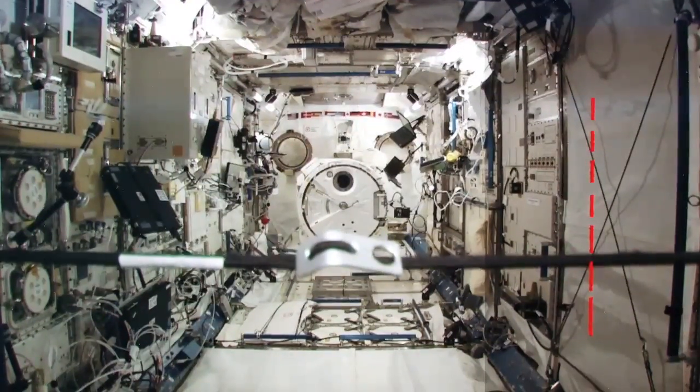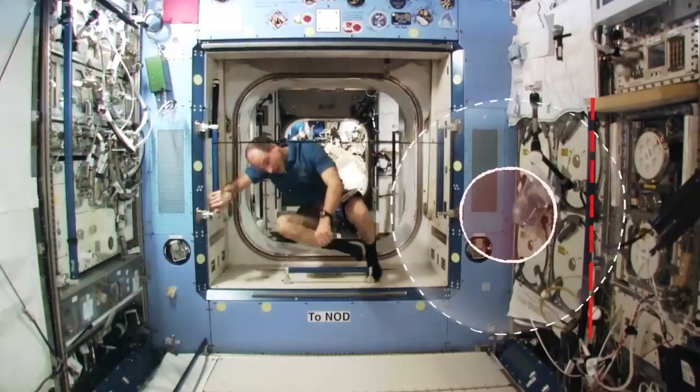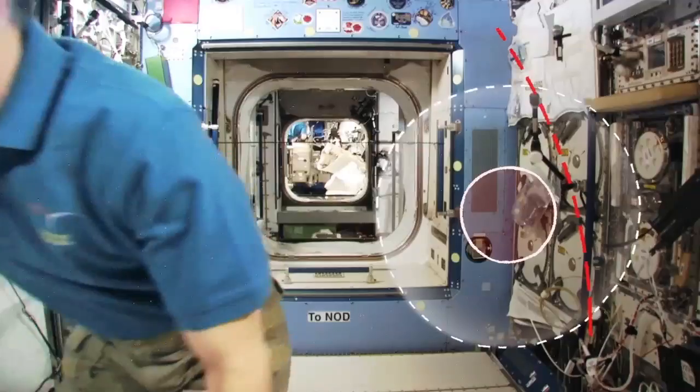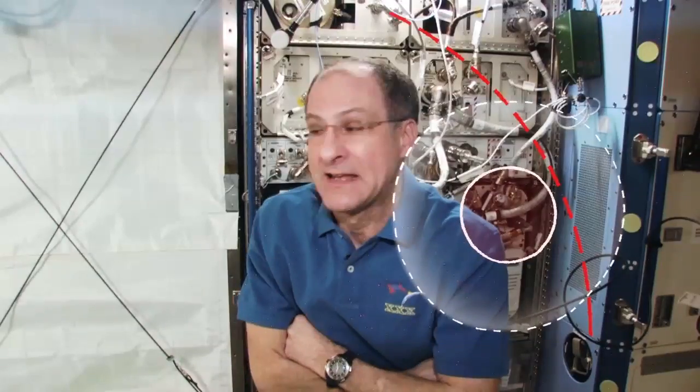Gravity will attract an object if it's moving in a straight line, and it will no longer move in a straight line. It gets bent and it goes in a curved trajectory.